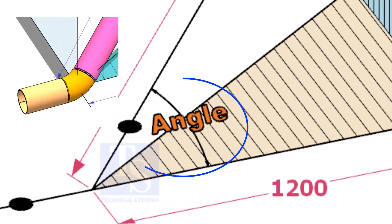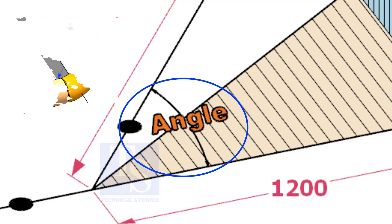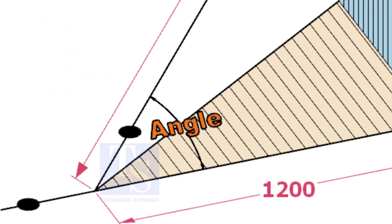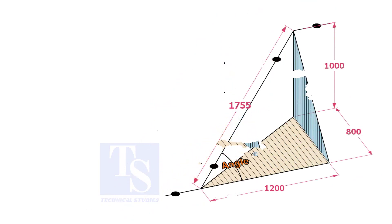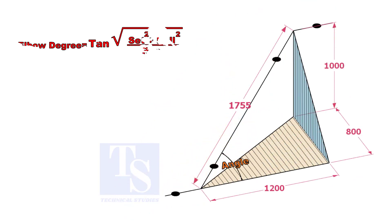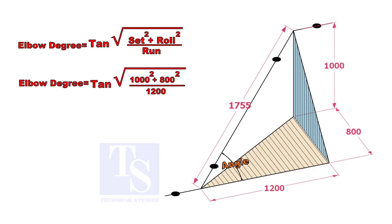Let us calculate the degree of the elbow or the including angle. The formula is: the root of the sum of the set and the roll, divided by the run, taken as tan inverse.